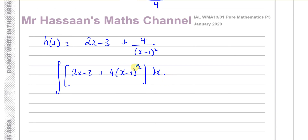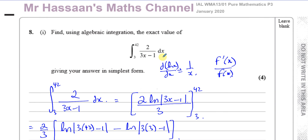The reason I write it as x minus 1 to the minus 2 rather than using the ln form is important: in the previous question with power minus 1, adding 1 to the power gives 0, and dividing by 0 is undefined — that's why we use ln for that case. Here the power is minus 2, so adding 1 gives minus 1, which presents no problem when integrating.